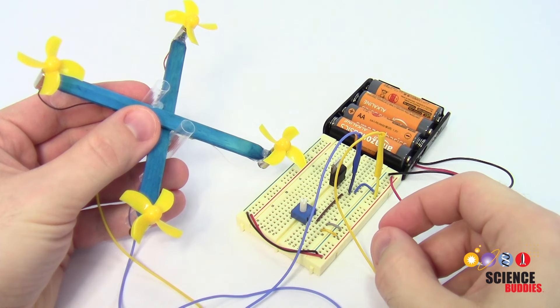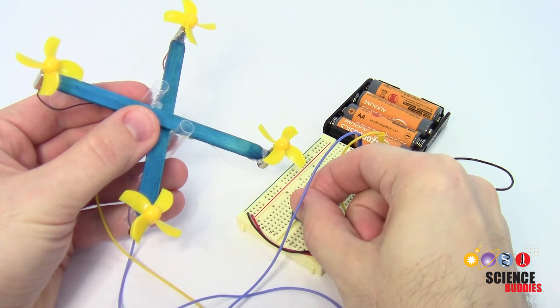In this project, you'll build a simple circuit that lets you turn a knob to control the speed of the drone's motors. This will let you control its altitude.